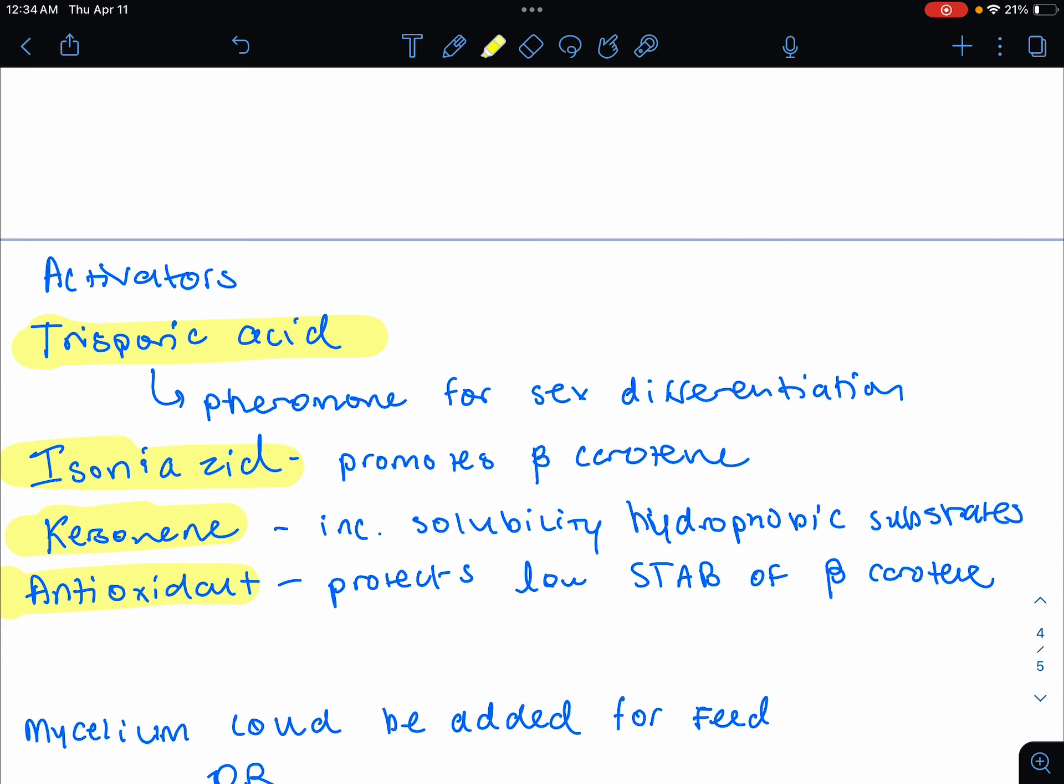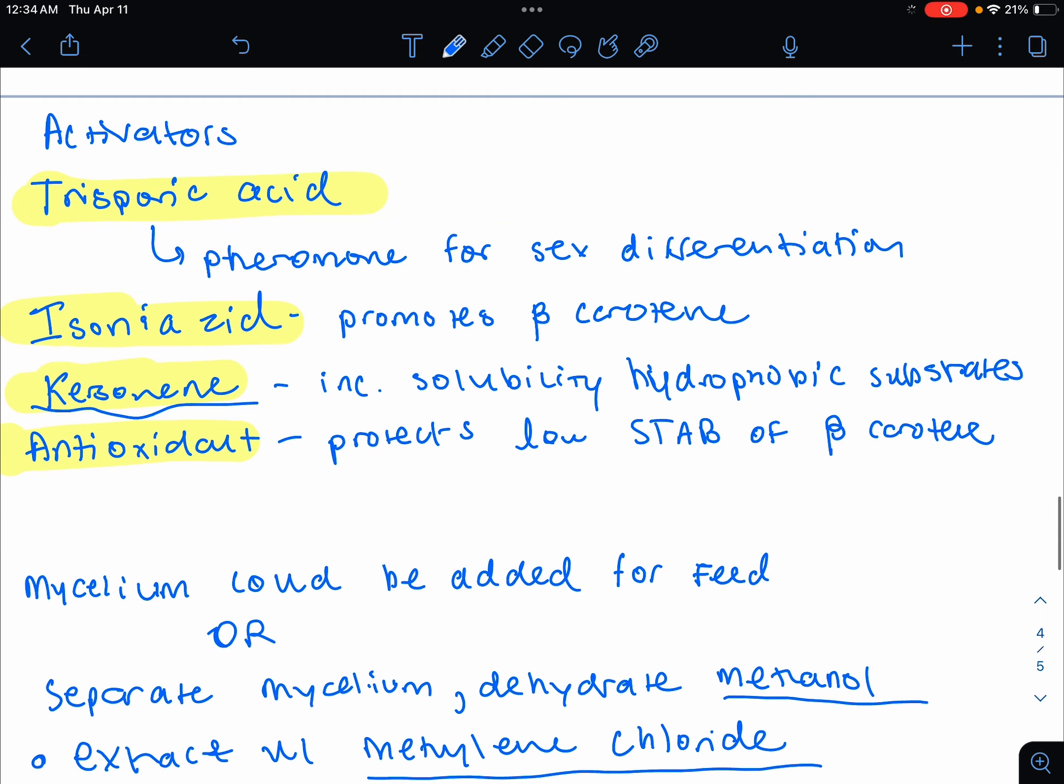We also have these activators present for beta-carotene. You need trisporic acid. This is a pheromone responsible for sexual differentiation. And then you're also going to add isoniazid. This is going to promote beta-carotene production. You also add kerosene. This is a very interesting point. You add kerosene to this to increase solubility of the hydrophobic substrates. And then you're going to also add antioxidant because of the low stability of beta-carotene. This is going to protect the beta-carotene.